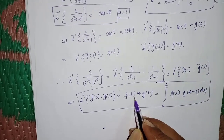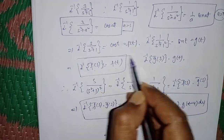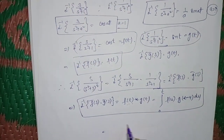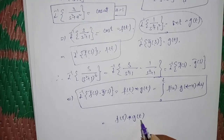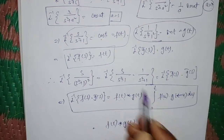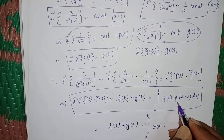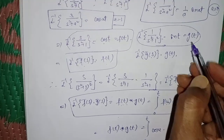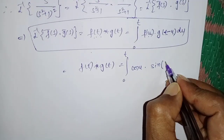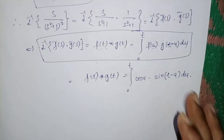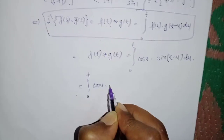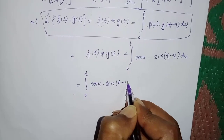Now f(t) = cos(t) and g(t) = sin(t). So f(t)*g(t) = integral from 0 to t of cos(u)·sin(t−u) du, where we substitute u for t in f(t) and (t−u) for t in g(t), giving sin(t−u).